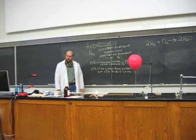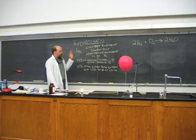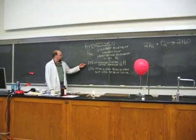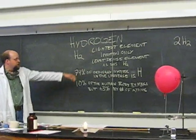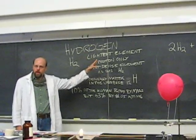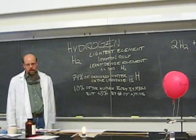All right, so today we're going to talk a little bit about the element hydrogen. Hydrogen is the most abundant element in the universe. It makes up 74% of ordinary matter in the whole universe. It's the lightest element. It only has one proton in every nucleus, and it's the least dense element.